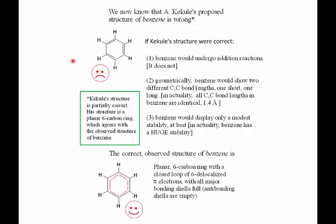With respect to benzene and its structure, it was difficult for chemists to figure out. It was discovered in the early 1800s. In 1865, August Kekulé proposed a structure which was a better idea than anybody else had. His structure is a six-carbon ring with three separate double bonds. We would assign to it the name 1,3,5-cyclohexatriene.